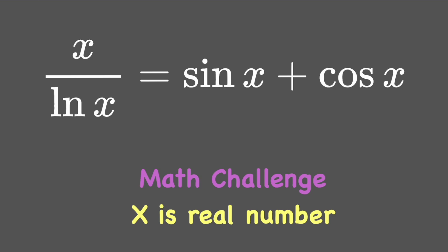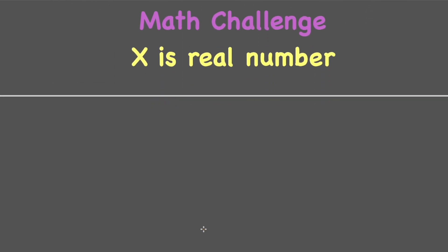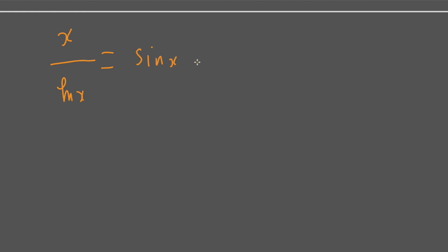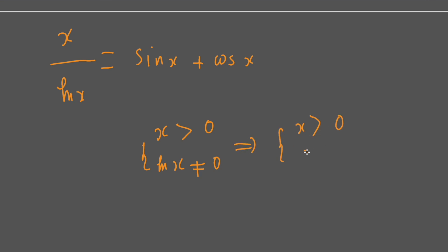Welcome back. The problem today is about the equation x over ln(x) equals sin(x) plus cos(x). The domain requires x to be greater than 0 and ln(x) different from 0, so x greater than 0 and x different from 1. That is the domain of x in this problem, where x is a real number.